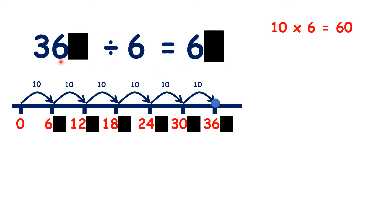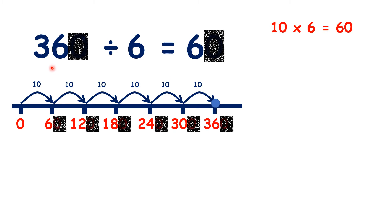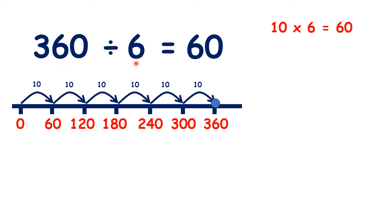And if we know that 36 divided by 6 is 6, we know that 36 tens — so 360 — divided by 6 is 6 tens. So 360 divided by 6 is 60.